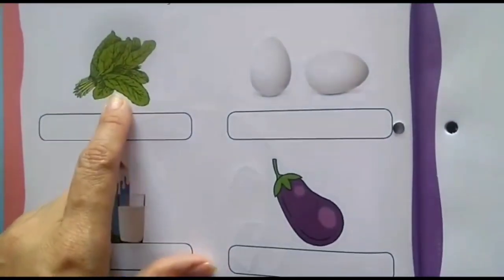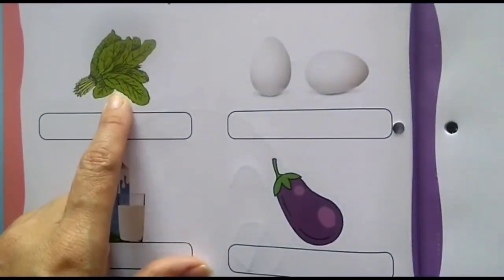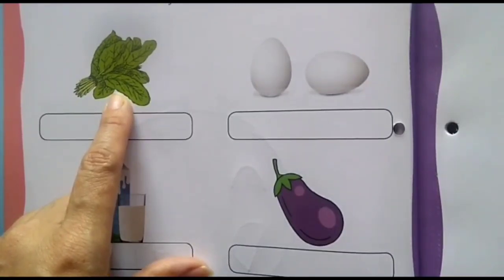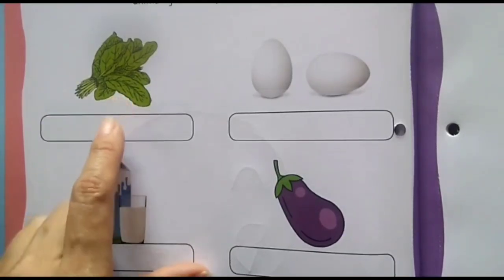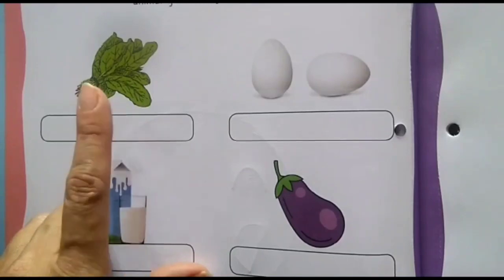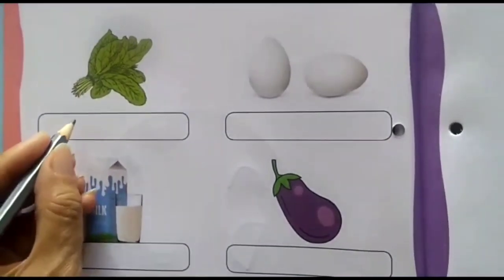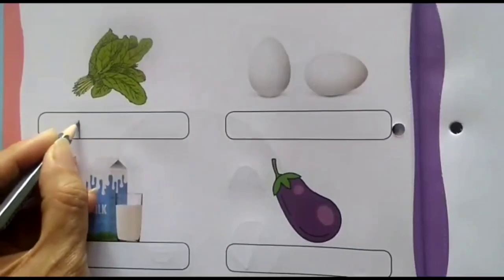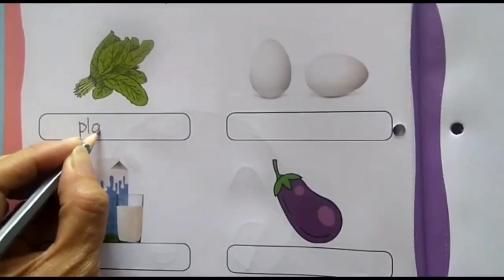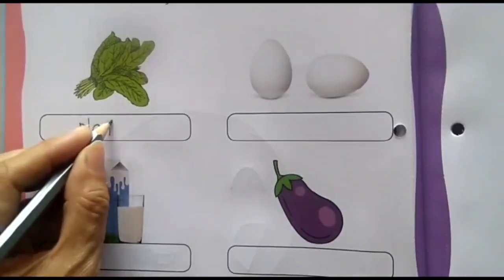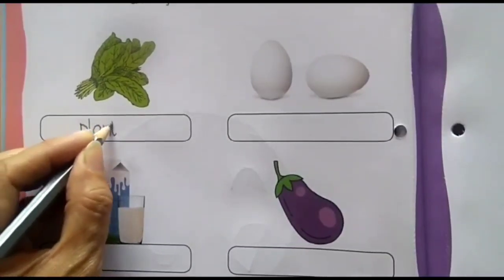What is this? Spinach. Do we get spinach from any plant or from animals? We get it from? Yes, we get it from plant. Right. So here we are going to write the word plant. You can see the spelling also here. So let's write that. P-L-A-N-T. Plant.